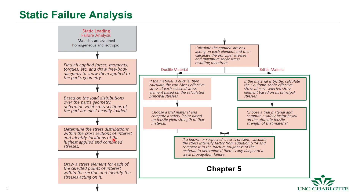We account for stress distributions, calculate those stresses, and for ductile materials we use von Mises, which we talked about in the last lecture. For design purposes we pick material and safety factor against the tensile or yield strength. For brittle materials we use the Coulomb-Mohr effective stress at each selected stress element based upon the principal stresses.